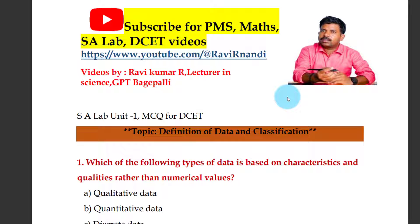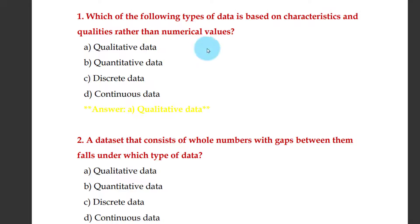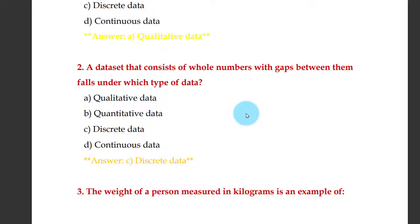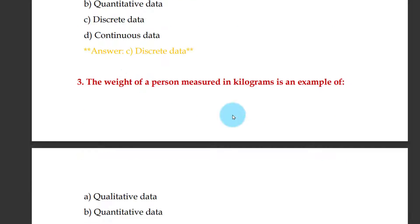Let us discuss MCQ questions. First question: which of the following types of data is based on characteristic and quality? The answer is qualitative data. A data set that consists of whole numbers with gaps between them falls under which type of data? The answer is discrete data.